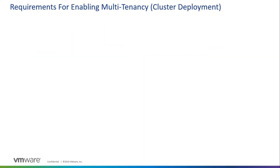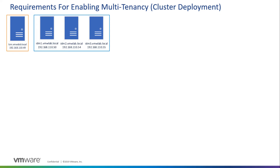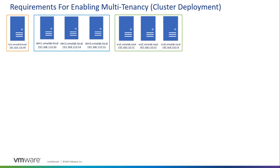Now let's take a look at the requirements for enabling multi-tenancy for a cluster deployment. In this scenario we have one LCM appliance, three IDM appliances forming a VIDM cluster (IDM1, IDM2, IDM3), and three VRA appliances forming the VRA cluster (VRA1, VRA2, VRA3). The desired state is the same — establishing the default tenant as the provider org and two additional tenants, tenant-1 and tenant-2.